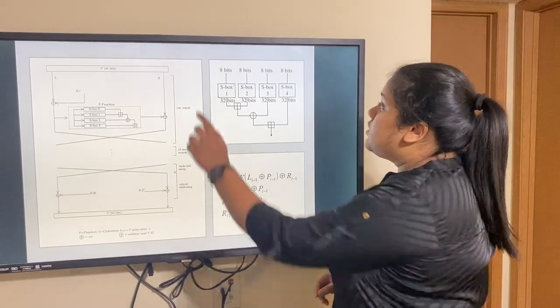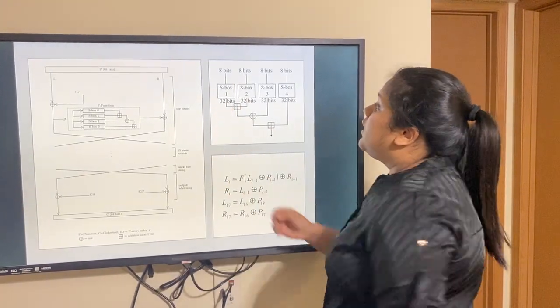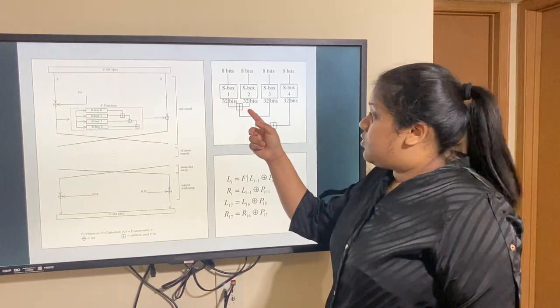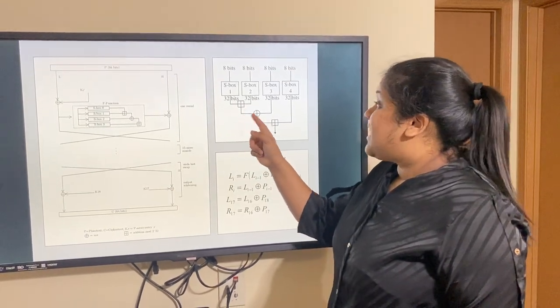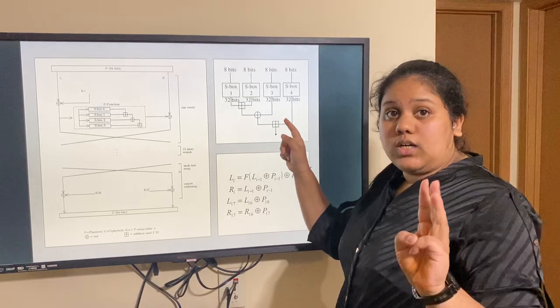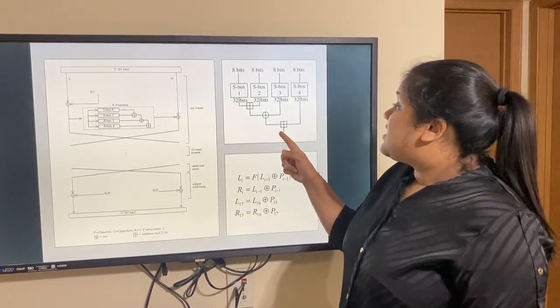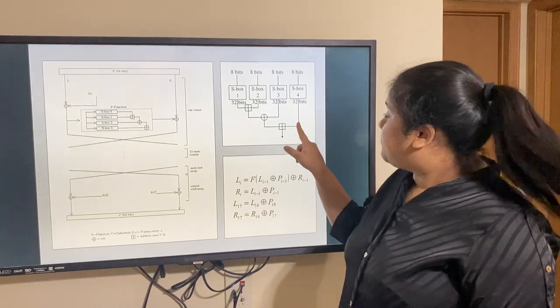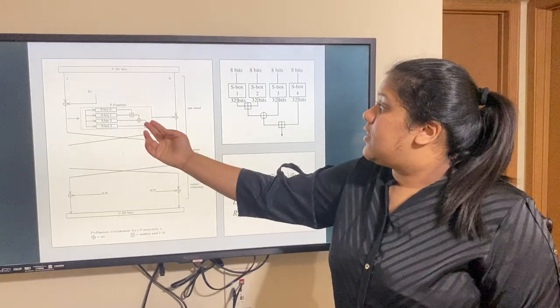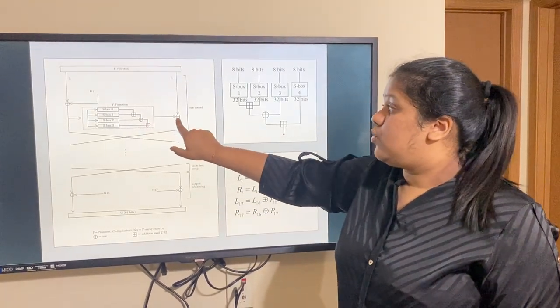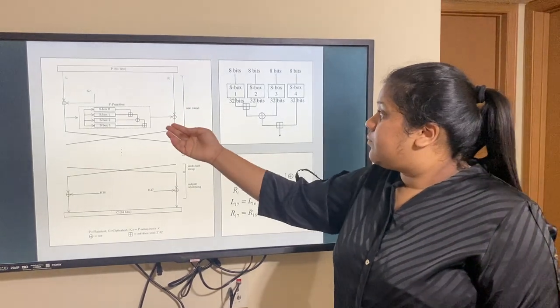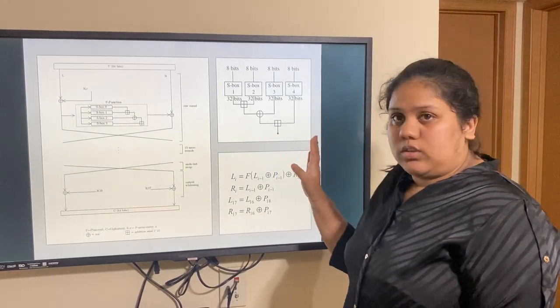Then after this, what happens is the value from the first S-box is added to the value of the second S-box. The value that we get here is XORed with the value that we get from the third S-box. After this, the value produced hence, is added to the value that comes from the fourth S-box. And that is how we use this value here to XOR with the right-hand part of our plaintext. And that is how the function works.